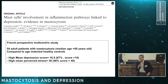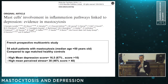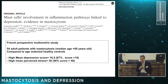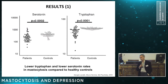We performed a prospective multicentric study on this rare condition, studying 54 patients with mastocytosis compared to age-matched healthy controls. Again, we found high mean depression scores — two-thirds of patients with mild to moderate or even severe depression — and high mean perceived stress. We found reduced serotonin levels and reduced tryptophan levels in comparison with controls.